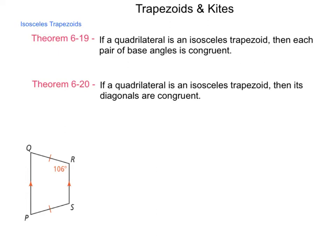Given the figure below, trapezoid PQRS, we have our set of parallel sides and another set that are congruent to one another but not parallel — this is an isosceles trapezoid. We need to find all the interior angles. Employing Theorem 619, each pair of base angles is congruent, so angle R and angle S, which share the same base, are congruent. The measure of angle S equals 106 degrees.